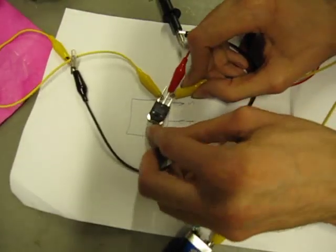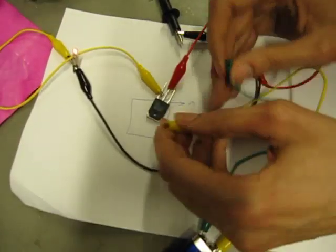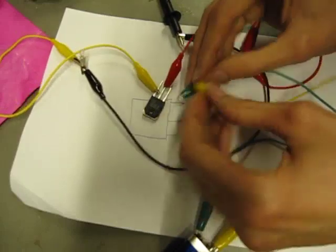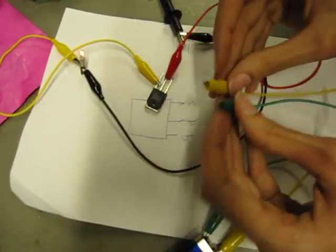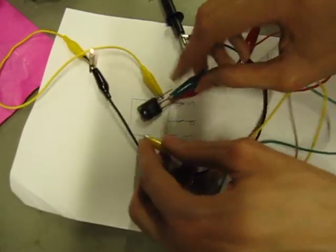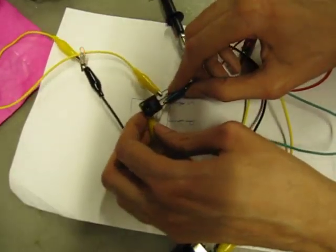The positive lead - current flows. Negative lead - it's off. Positive flow, positive lead it flows. Negative lead is off.